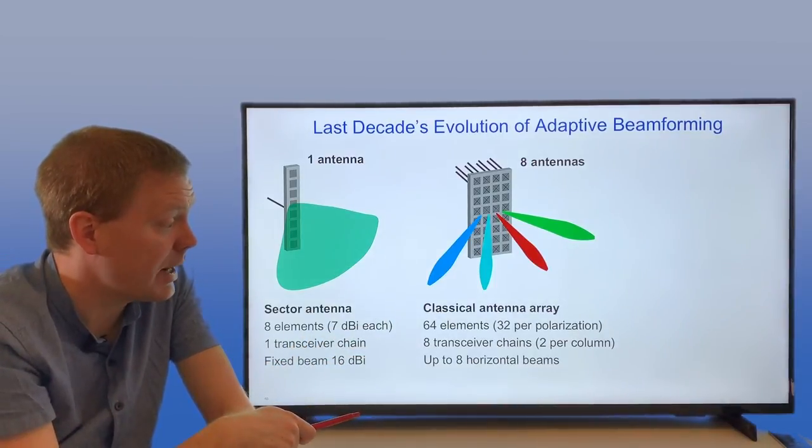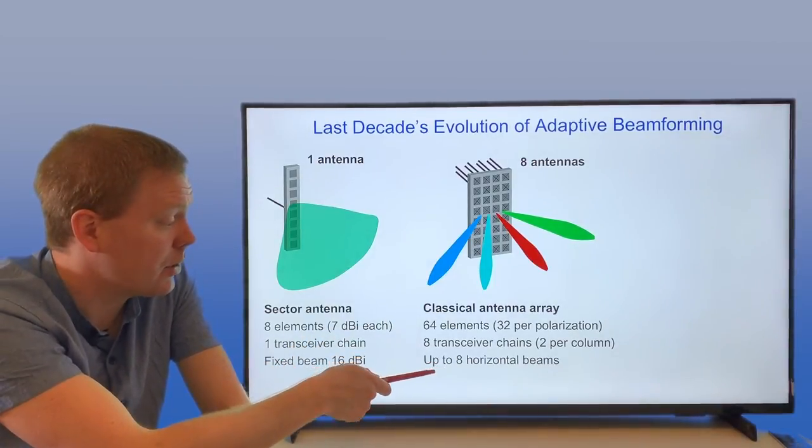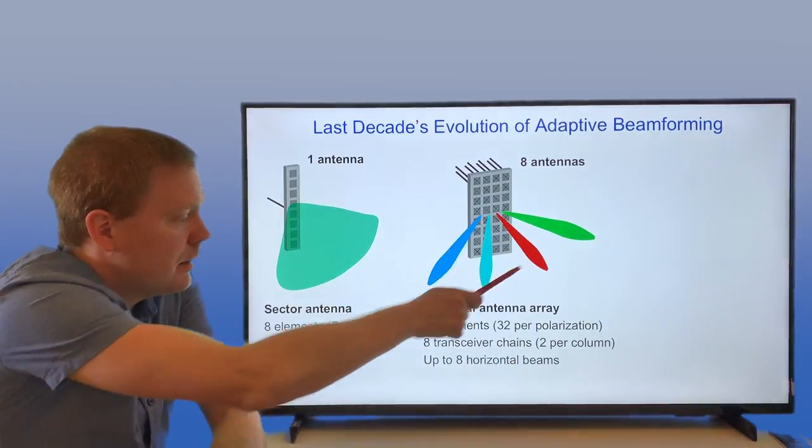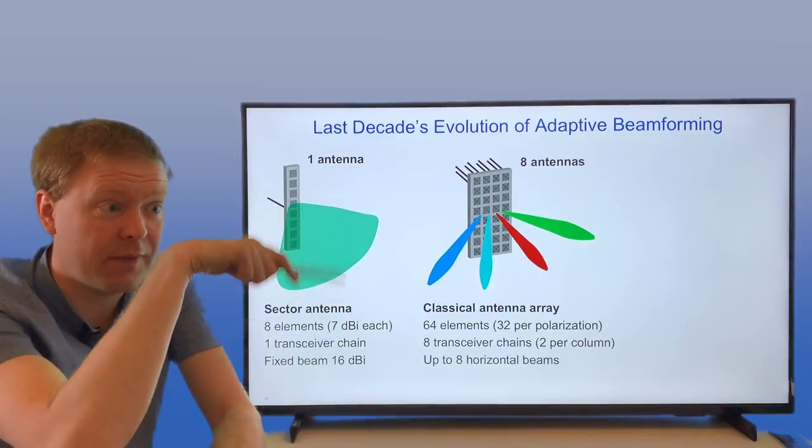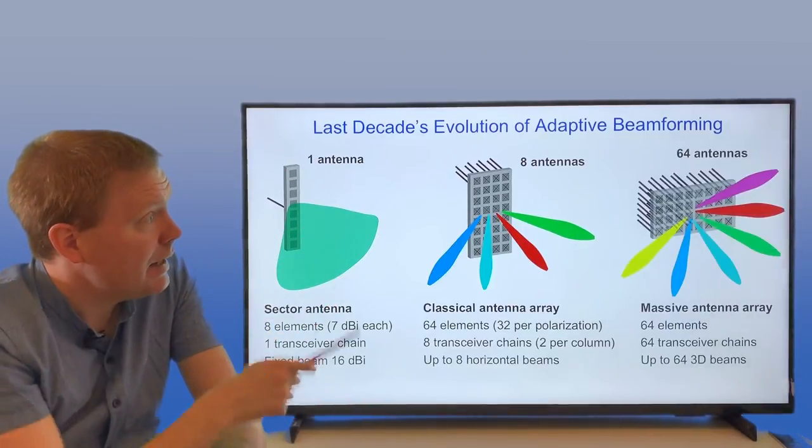So you have 64 radiating elements but only eight transceiver chains, two per column. You can form up to eight orthogonal horizontal beams pointing in different directions, but you cannot vary them in the vertical domain.